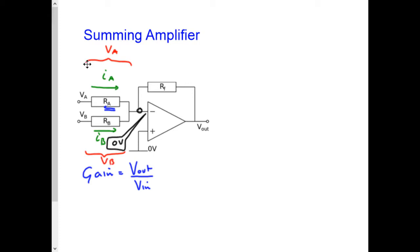No current flows into this input, so all of the current flows this way through the feedback resistor, so this is IF. The potential difference across that resistor is Vout, and it must be negative because the current is going from zero down to the output voltage, so the output voltage must be negative.